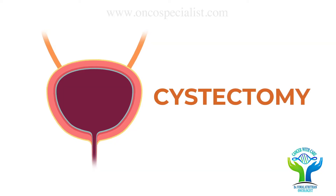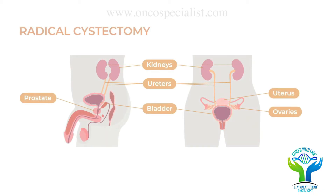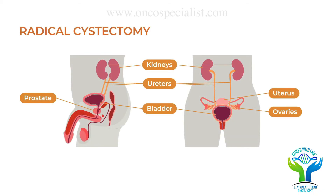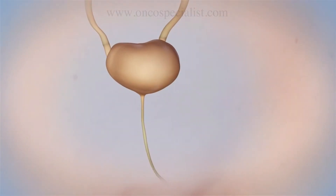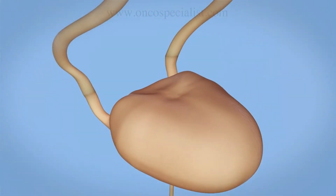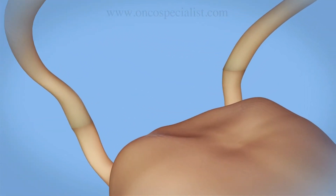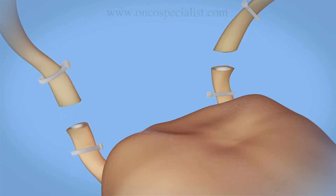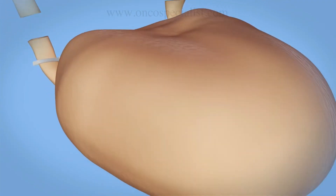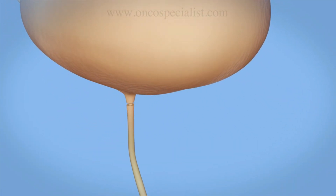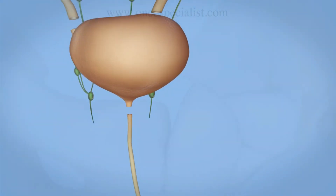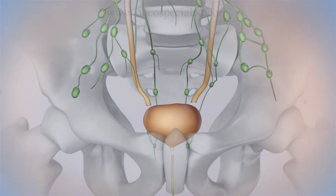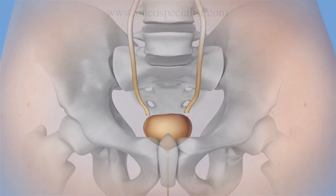Generally the bladder connects above to the kidney via the ureter and below via the urethra. In radical cystectomy, we disconnect the ureter from the bladder above, and disconnect the urethra connected to the exterior. Removal of the entire bladder along with the adjoining lymph nodes is called radical cystectomy.